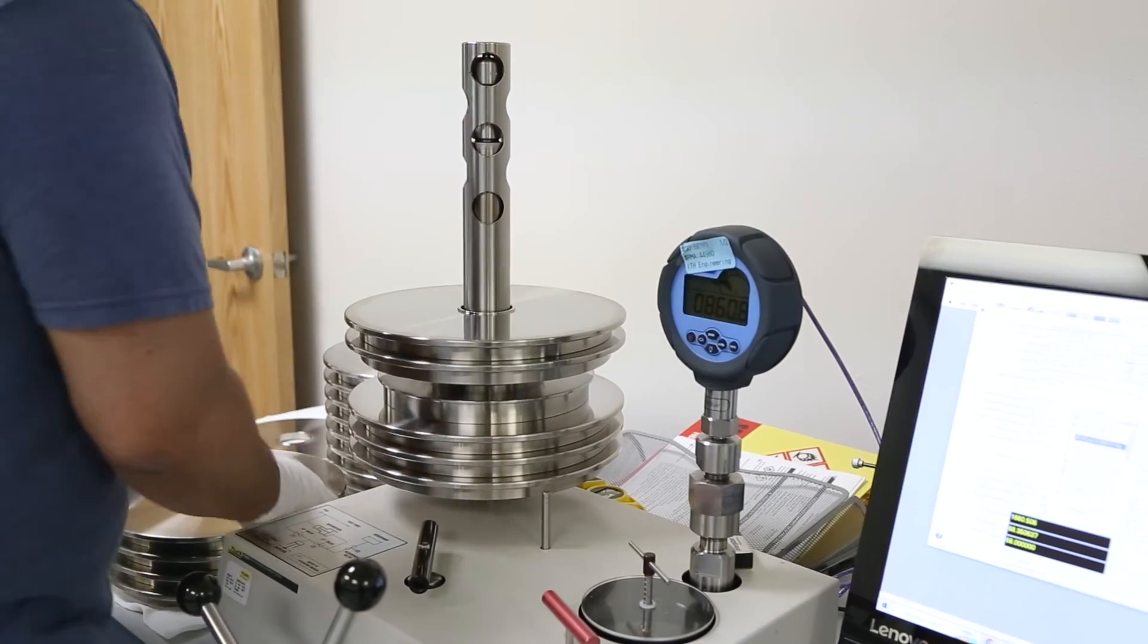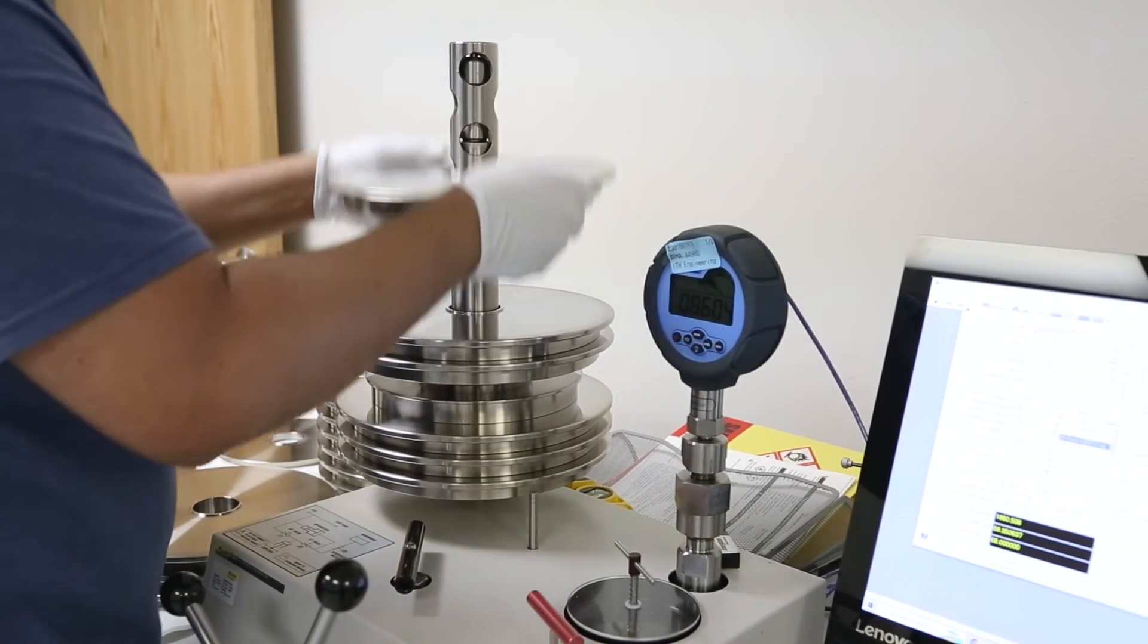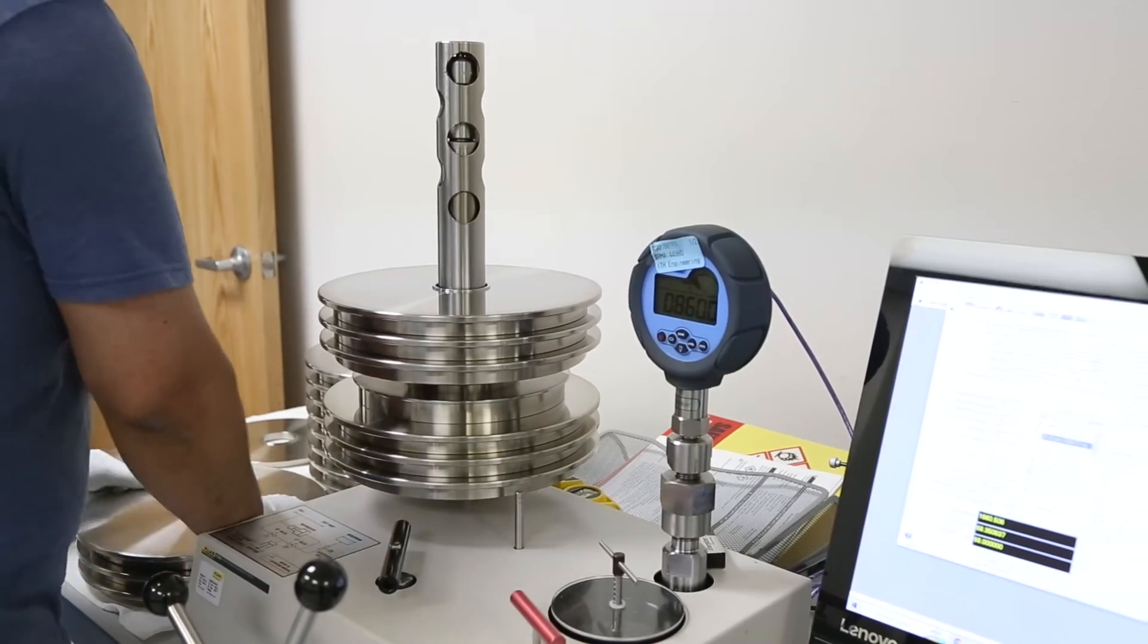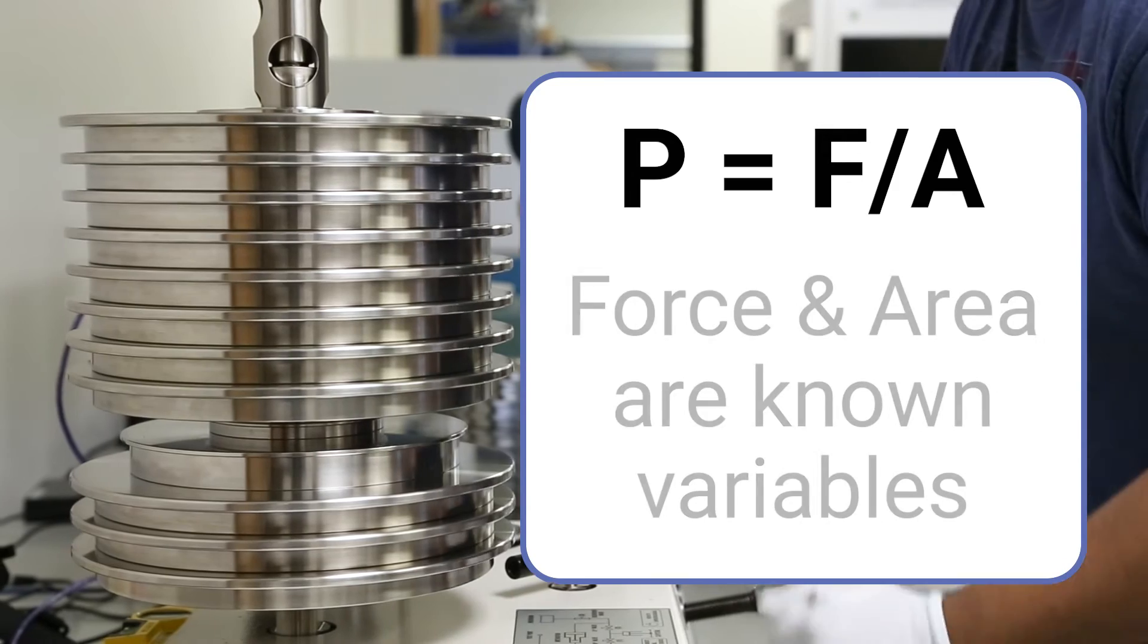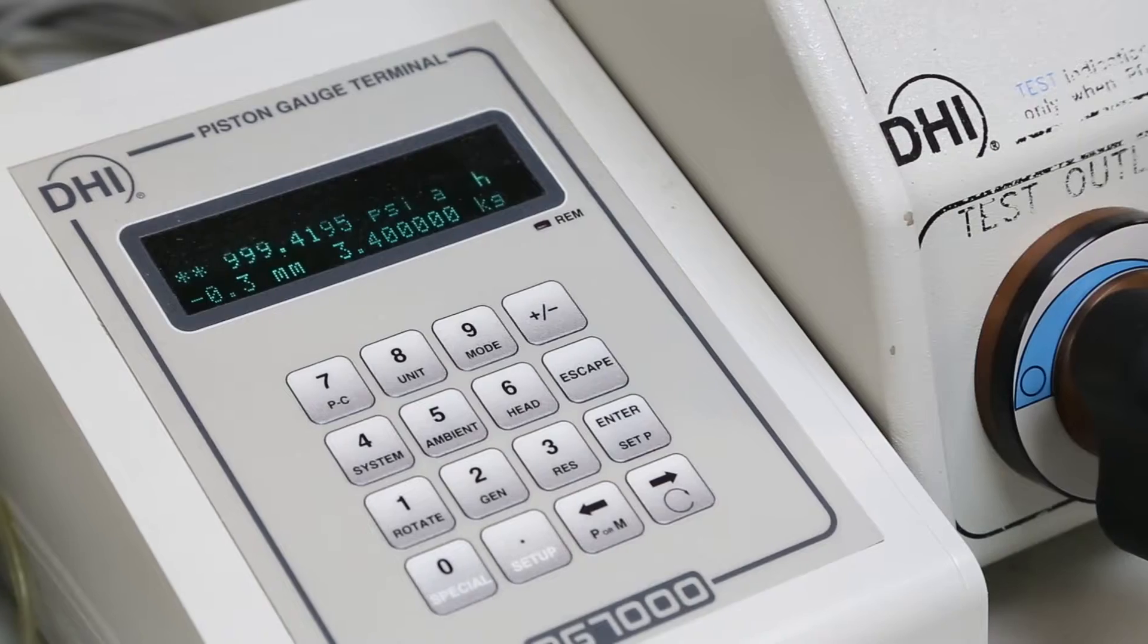A piston gauge obtains pressure by placing mass on a floating piston in a cylinder with a defined area. Since this pressure can be simplified to the equation pressure equals force over area, with known variables, deadweight testers are incredibly accurate, allowing them to function as the reference in a test.